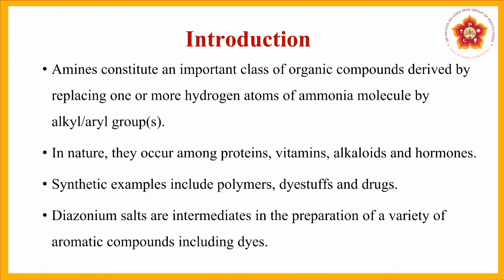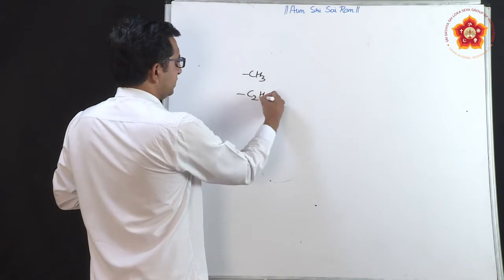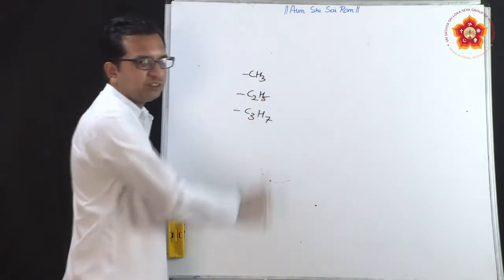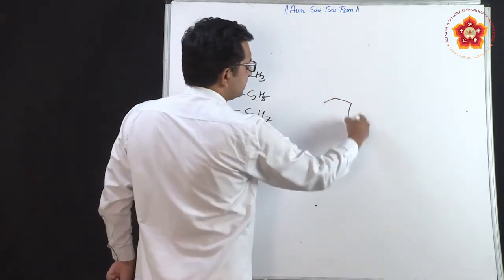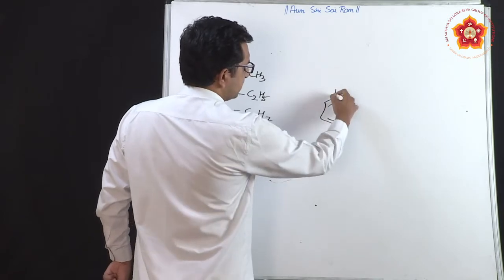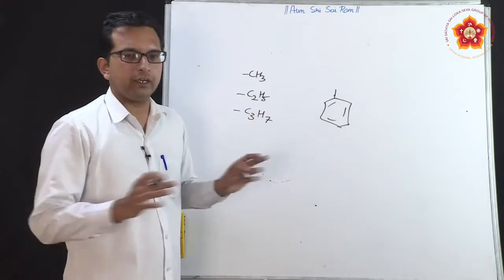What are amines? Amines constitute an important class of organic compounds derived by replacing one or more hydrogen atoms of an ammonia molecule by alkyl or aryl groups. Alkyl indicates methyl CH3, ethyl C2H5, propyl C3H7 and so on. For aryl systems, it is like a benzene ring attached to some other group — we call that a phenyl or aryl group.